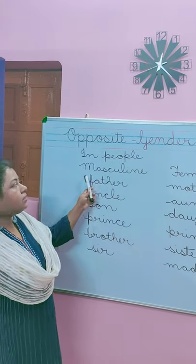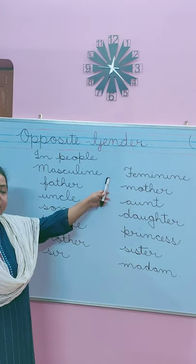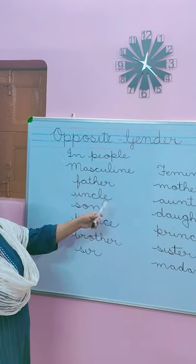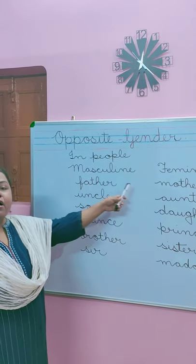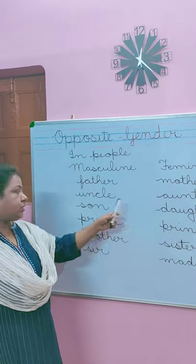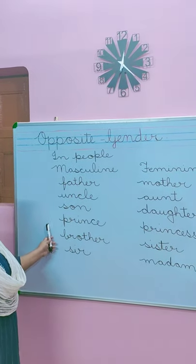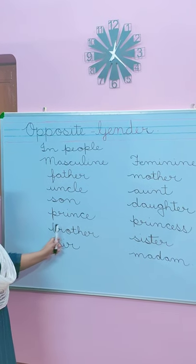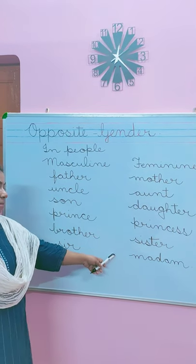These are opposite gender in people. Let's review: father — mother, uncle — aunt, son — daughter, prince — princess, brother — sister, sir — madam. Okay children?